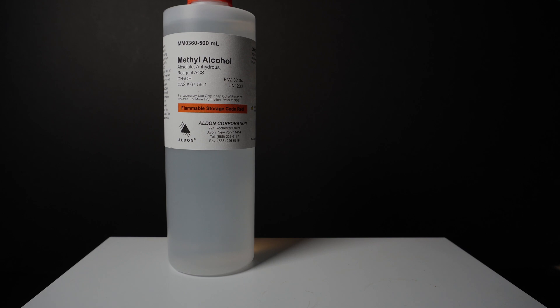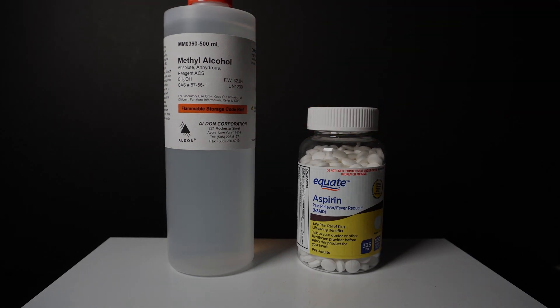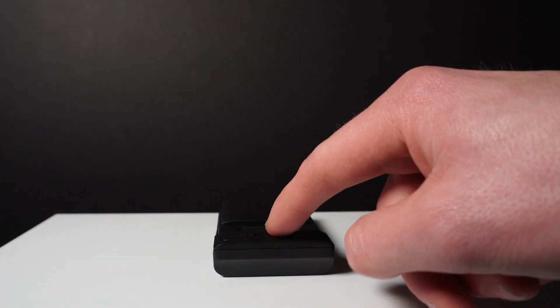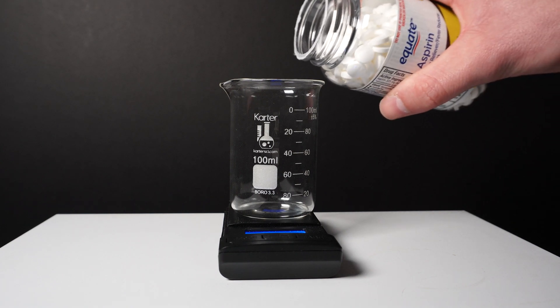For this we will only need two things. We will need methanol and aspirin pills. The best pills to get are those with as little other ingredients as possible. If you need to, just check the other ingredients solubility in methanol. ASA is pretty soluble in methanol, but the other ingredients should not be.